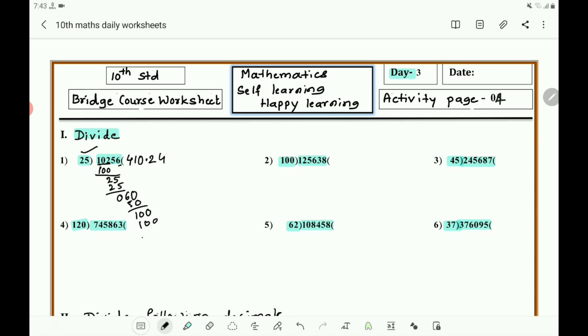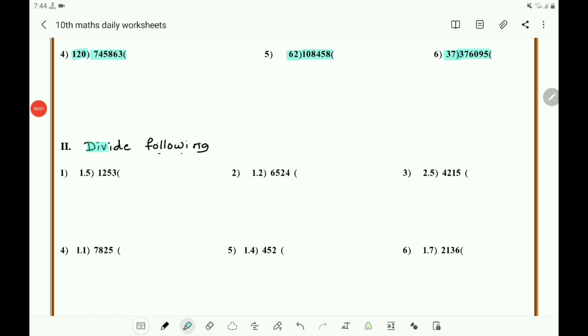Then take 0 point. 25 times 2 is 50, 10 is remaining. Take 0. 25 times 4 is 100, equals 0. So you got 410.24. Second menu: divide following as decimals. 1253 divided by 1.5, 6524 divided by 1.2, 4215 divided by 2.5, 7,835 divided by 1.1, 452 divided by 1.4, 2,136 divided by 1.7.